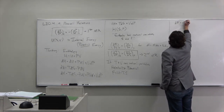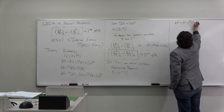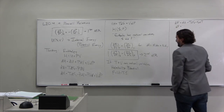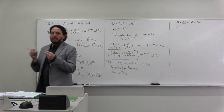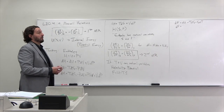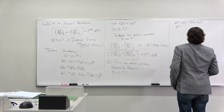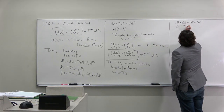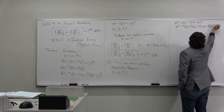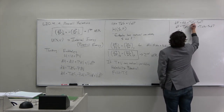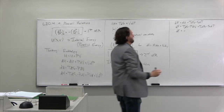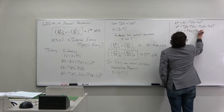Writing the Helmholtz potential as an exact differential: dF equals dU minus T dS minus S dT. Substituting dU equals T dS minus P dV, we get dF equals T dS minus P dV minus T dS minus S dT. The T dS terms cancel, giving dF equals minus P dV minus S dT.